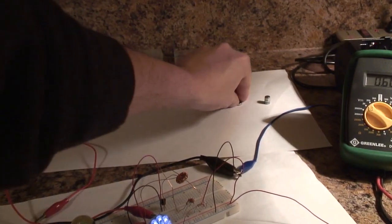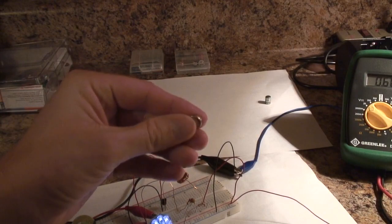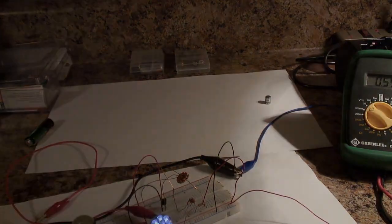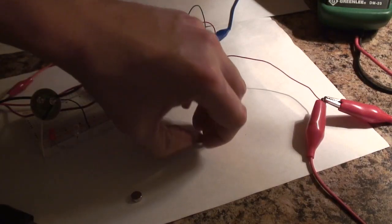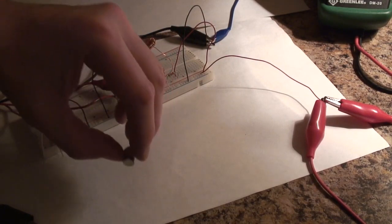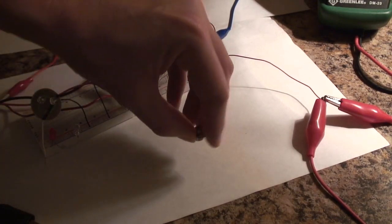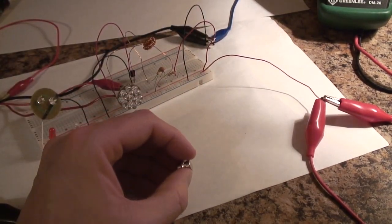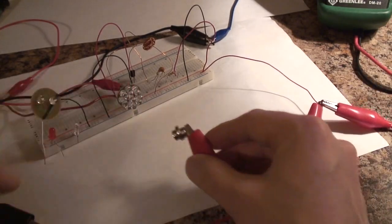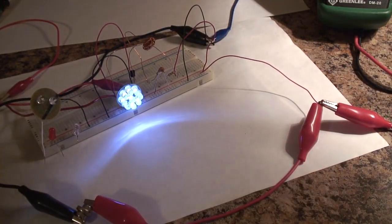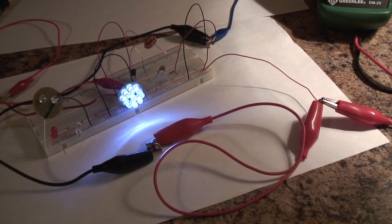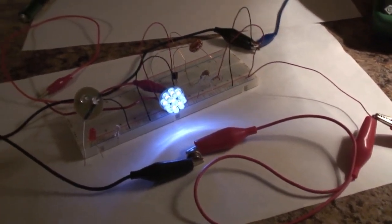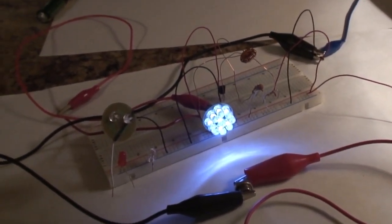Got two more batteries left. Here's another button cell, it's a thinner one. This tiny, thin button cell battery is lighting up nine LEDs.